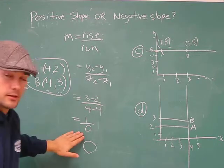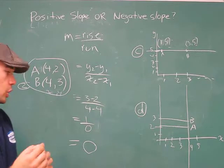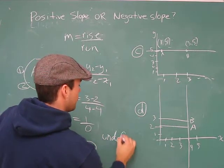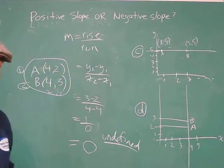Anything that has a 0 in the denominator is not actually a number. It's called undefined. Undefined. It's not a number.